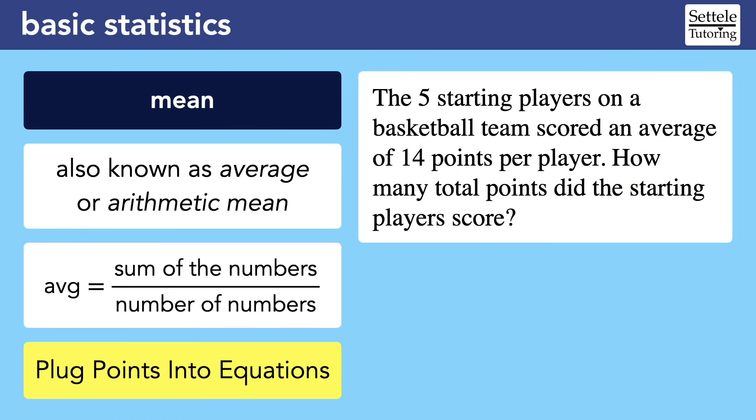Let's look at an example where this would be helpful. The five starting players on a basketball team scored an average of 14 points per player. How many total points did the starting players score? Since the question is talking about an average, I know to start plugging values into the average formula. In this case, they gave me the average to start, which is 14. They also told me that there are five players on the team, which represents the number of numbers in the data set. Out of habit, when I see an equation with a missing piece, I solve for that piece. So it makes sense to find the sum of the numbers, even if I have no idea what purpose it serves. Multiply both sides by five to find that the sum is 70.